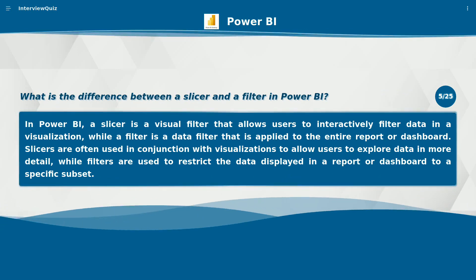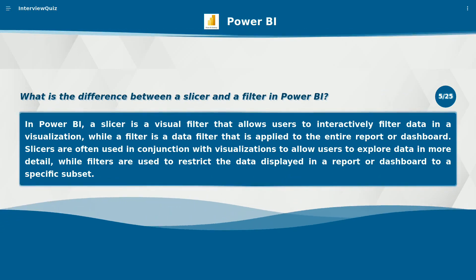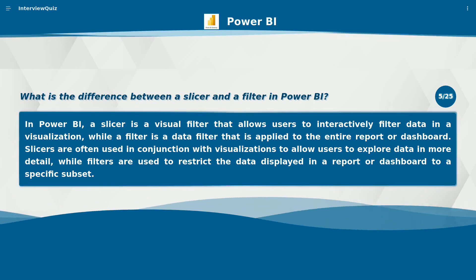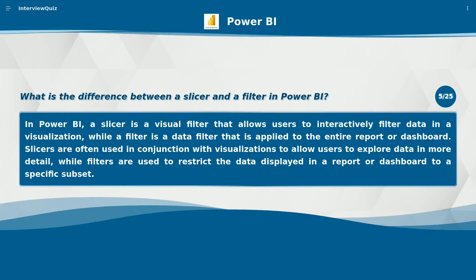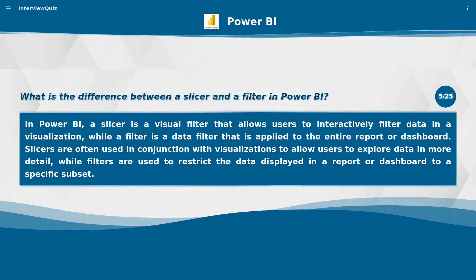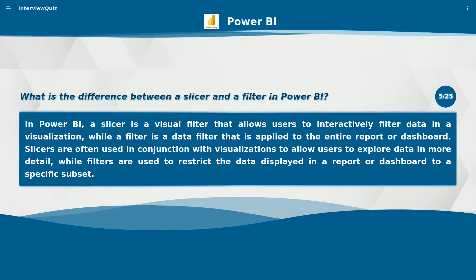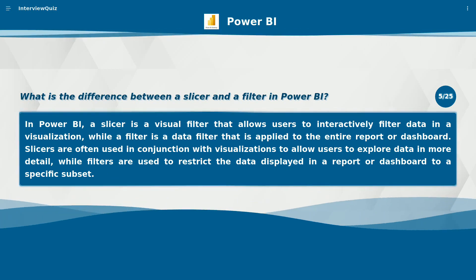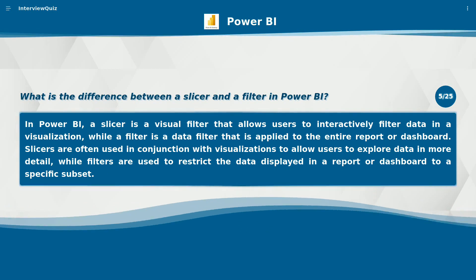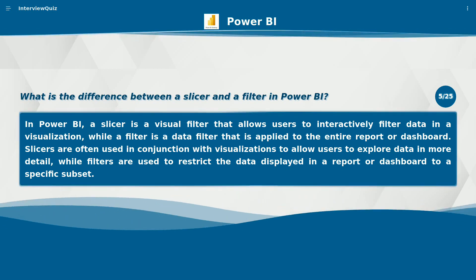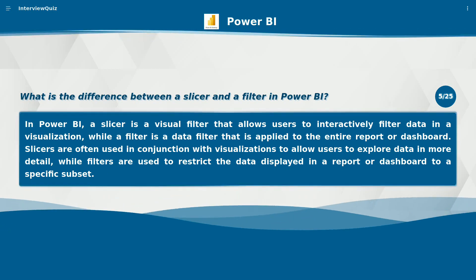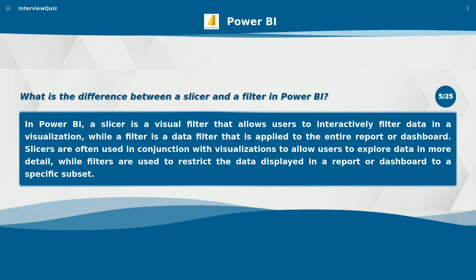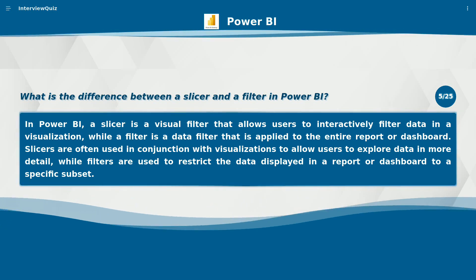What is the difference between a slicer and a filter in Power BI? In Power BI, a slicer is a visual filter that allows users to interactively filter data in a visualization, while a filter is a data filter that is applied to the entire report or dashboard. Slicers are often used in conjunction with visualizations to allow users to explore data in more detail, while filters are used to restrict the data displayed in a report or dashboard to a specific subset.